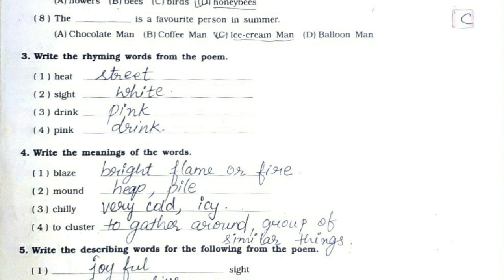Now question number 3: write the rhyming words. First one: street. Second one: white. Third one: pink. And fourth one: drink.